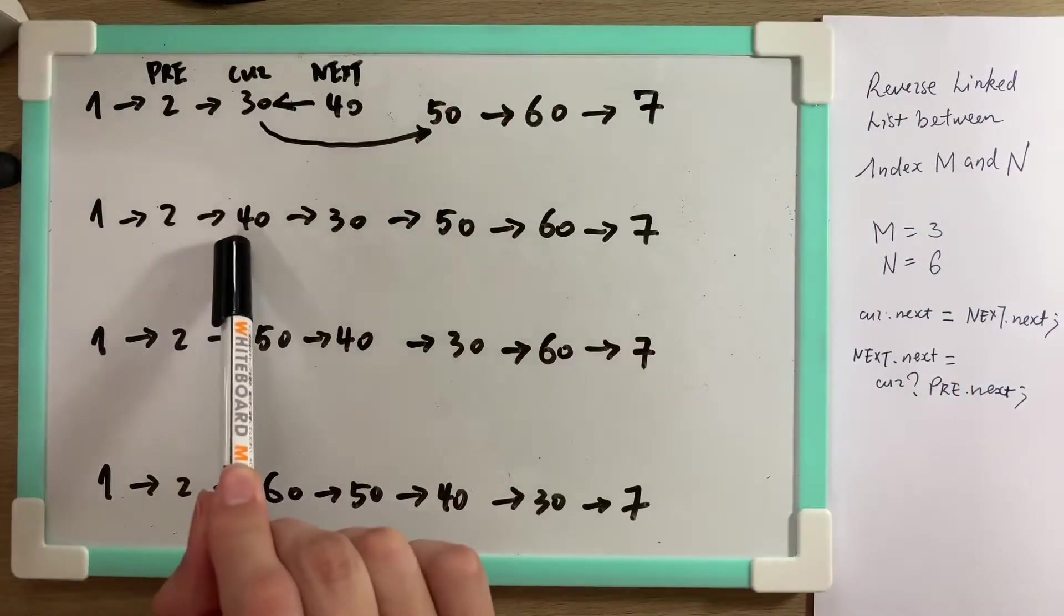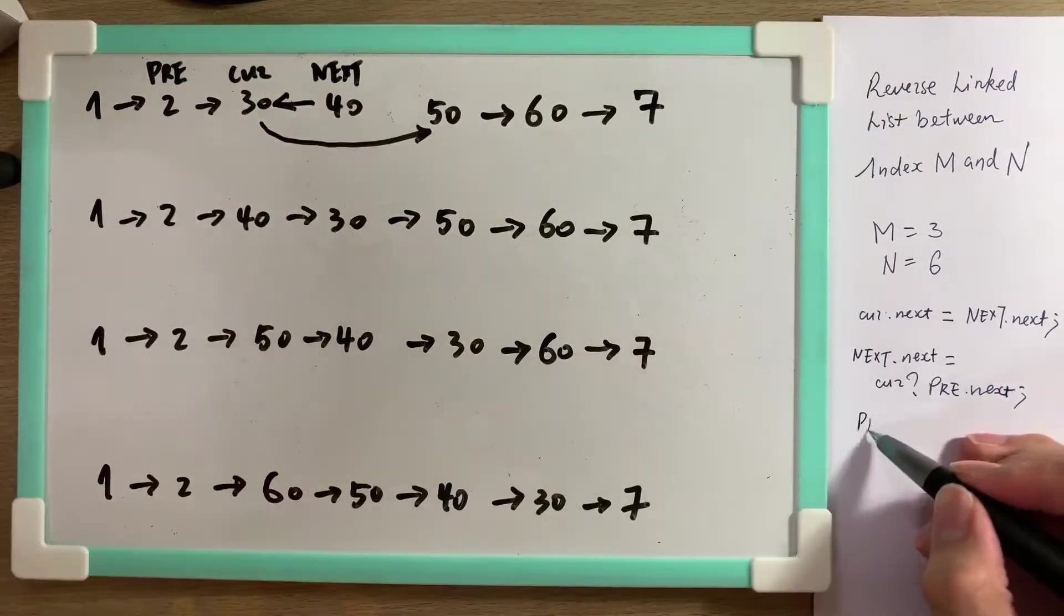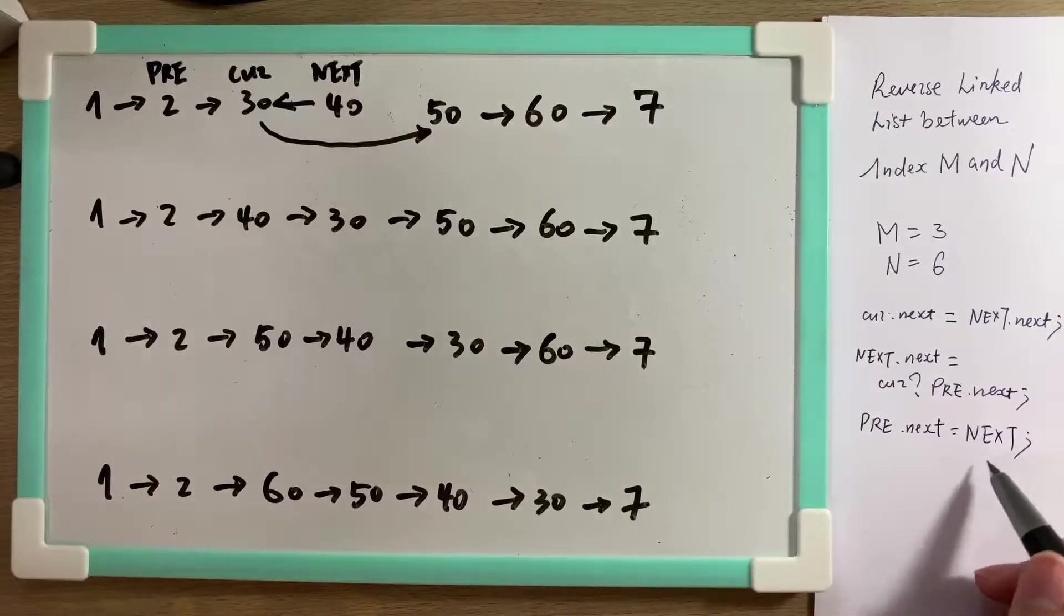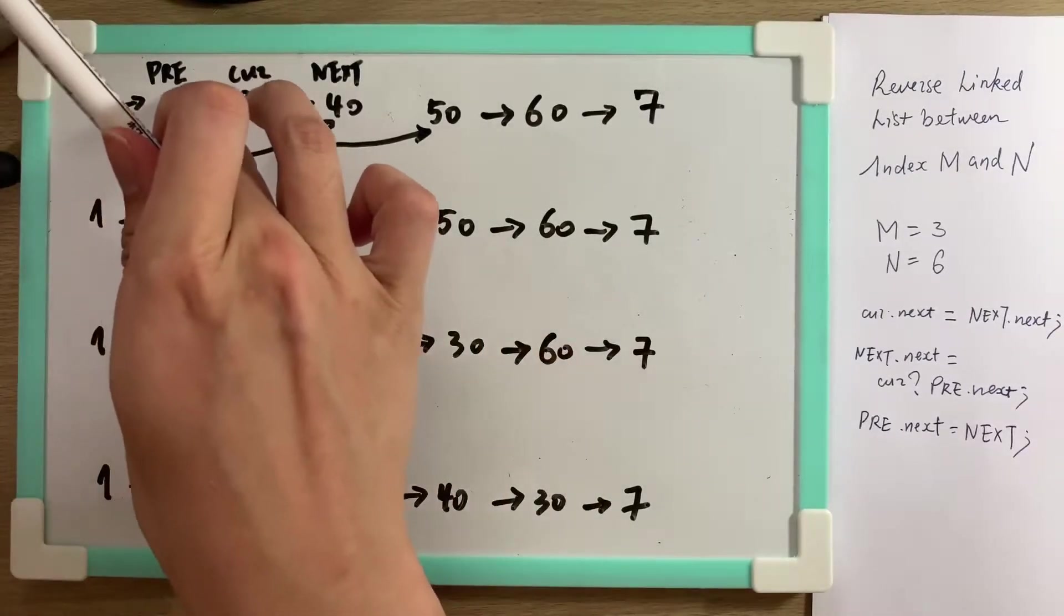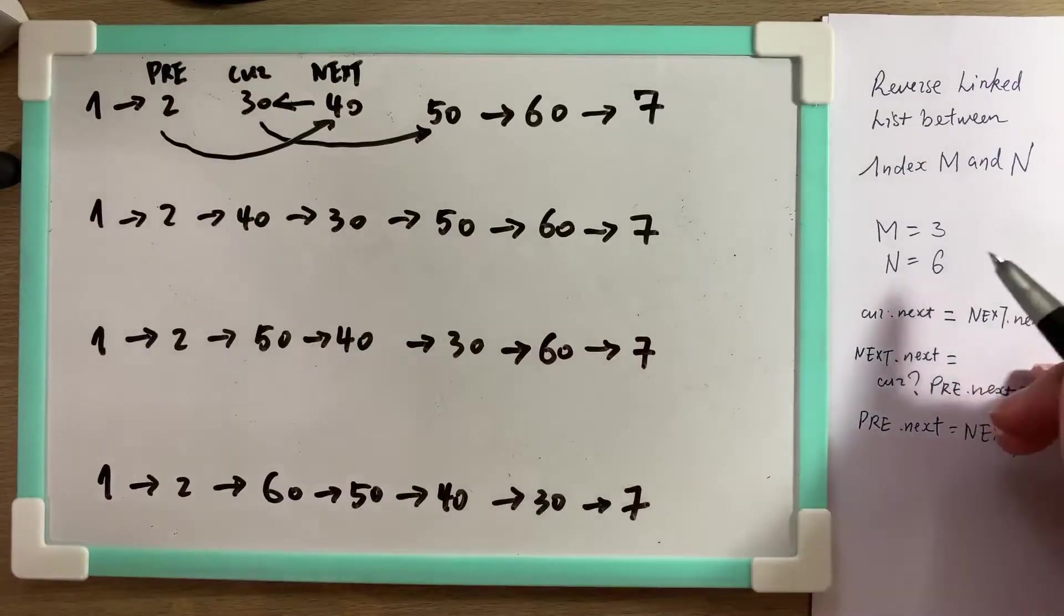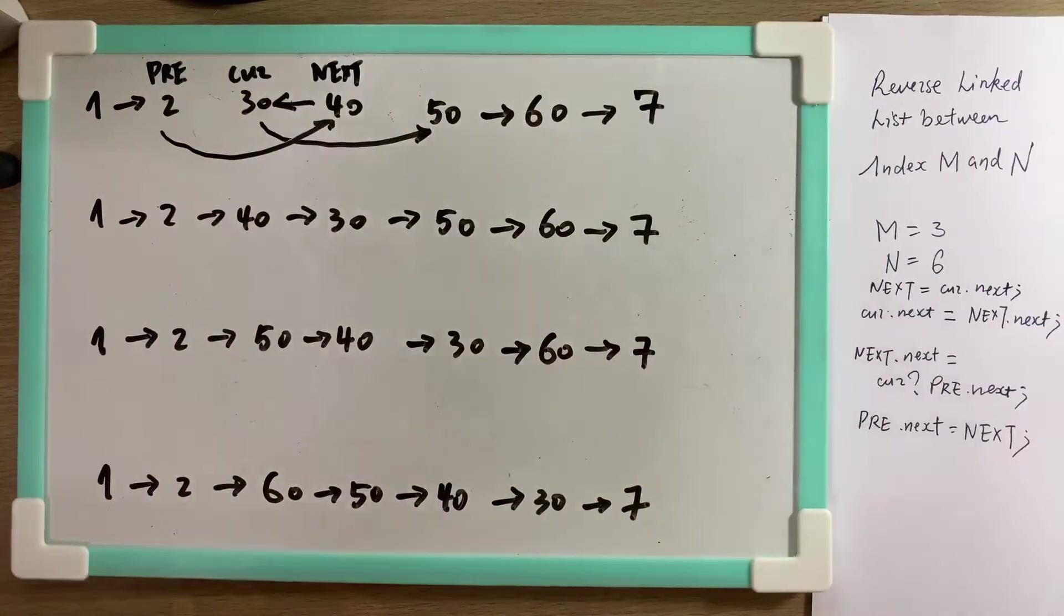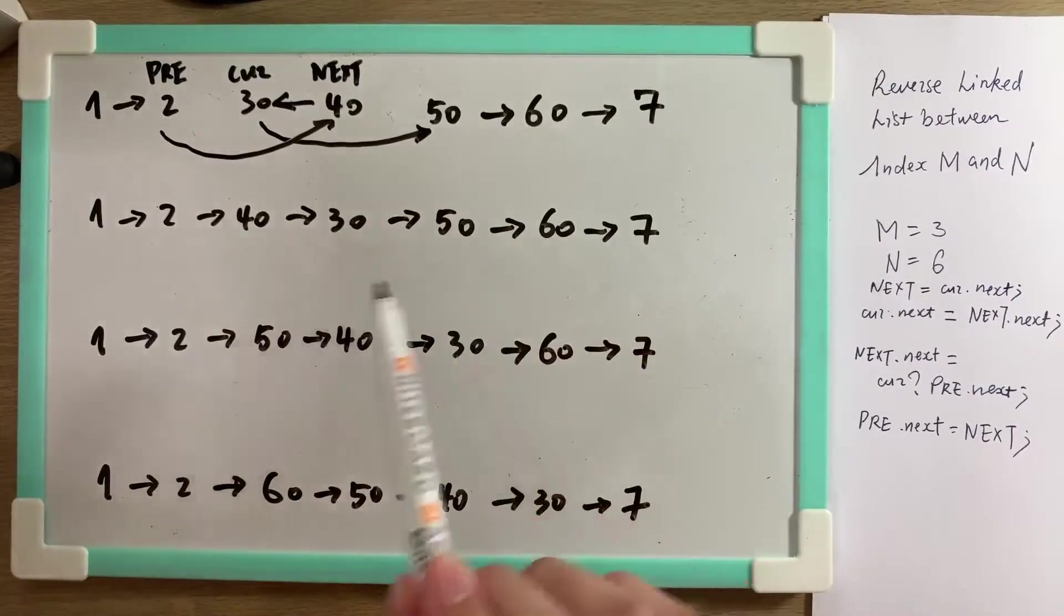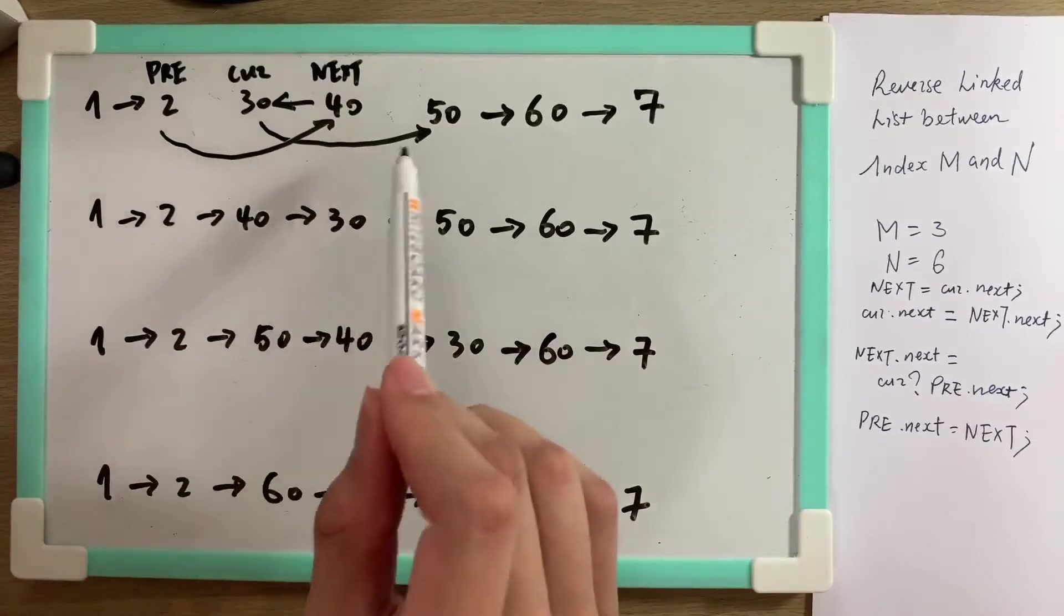Then 2 should point to 40. So pre should point to next. Pre point to next—I'm using capital next as the node. So pre point to next, this is gone. And of course, next is always the next of current. We have successfully go from the first linked list to the second linked list. 1 to 2, 2 to 40, 2 to 30, 2 to 50.